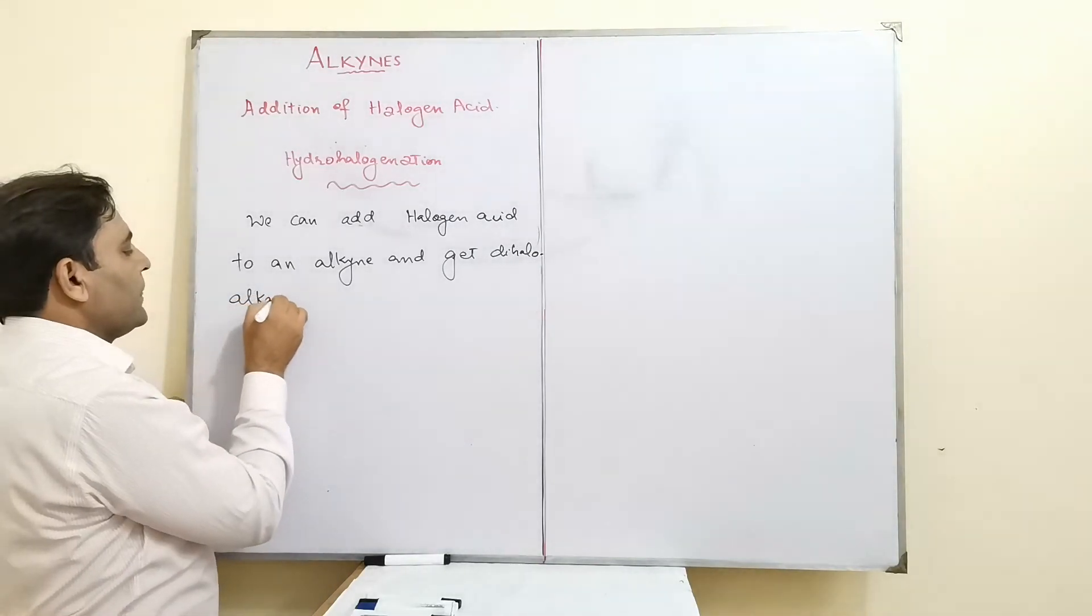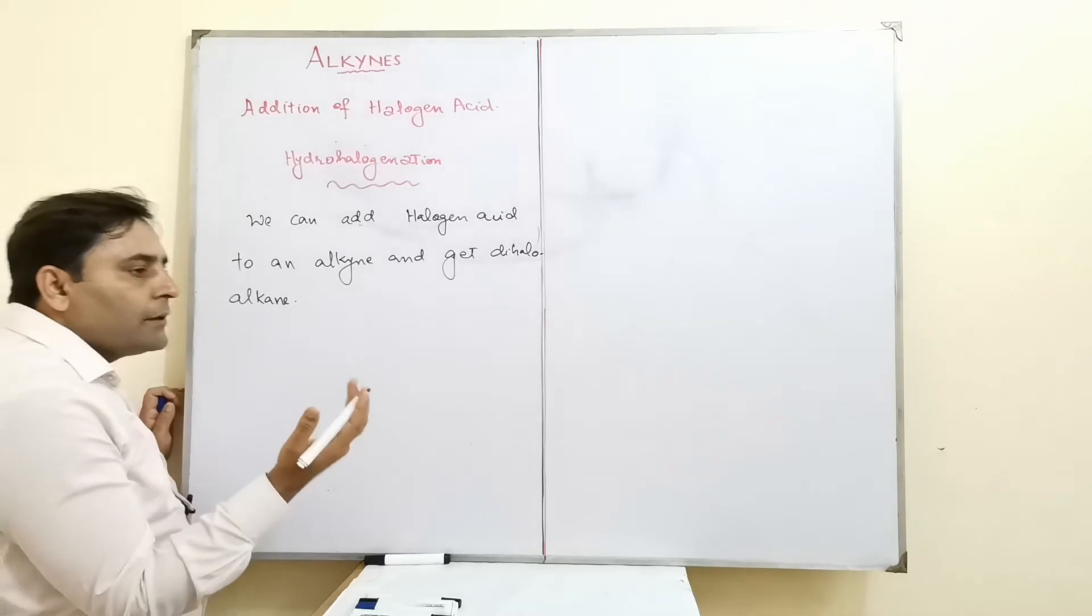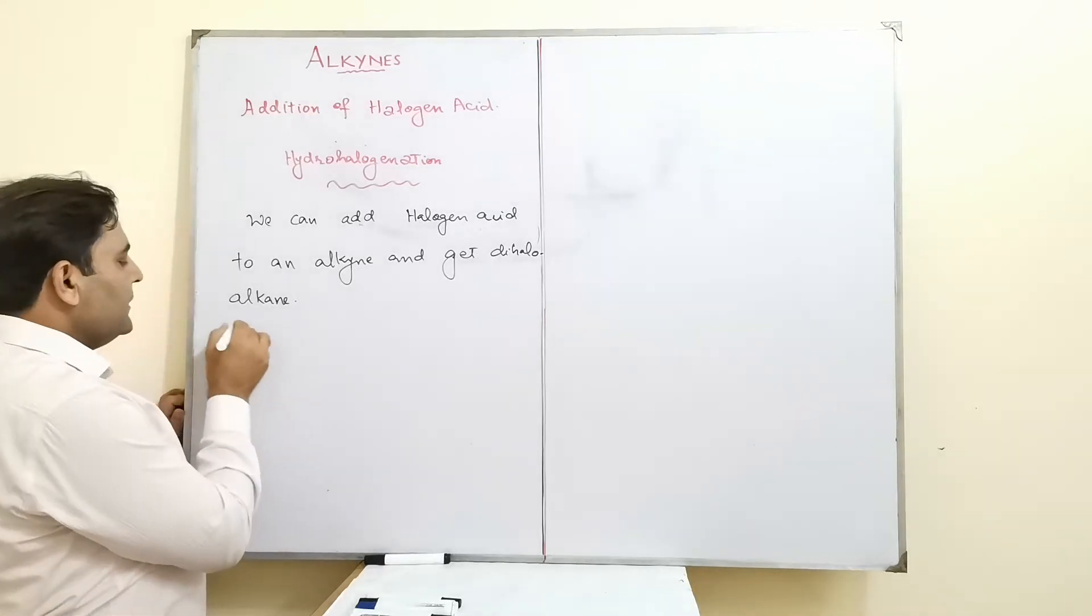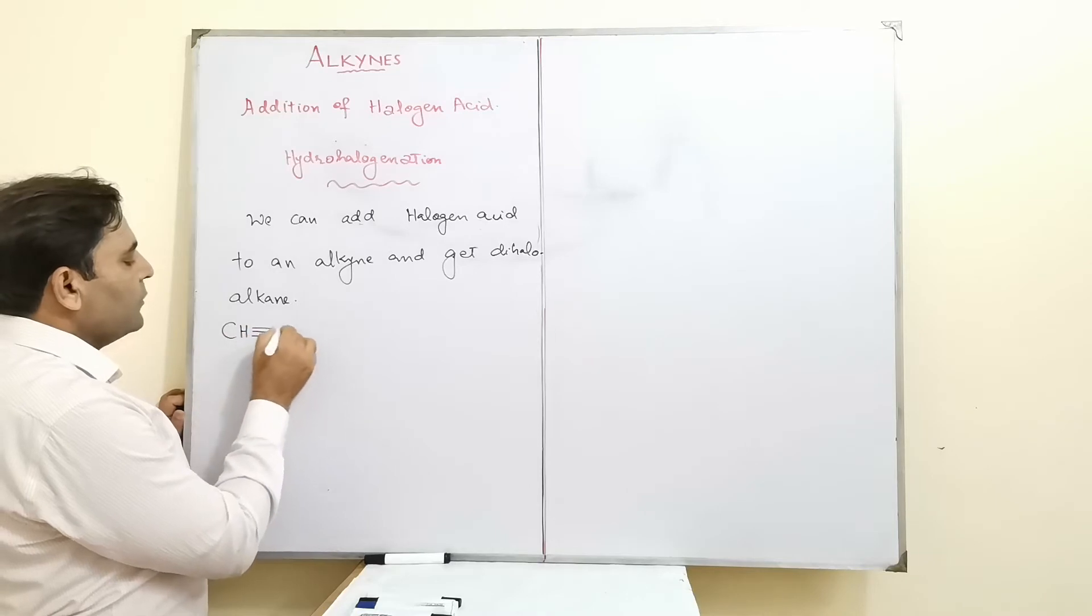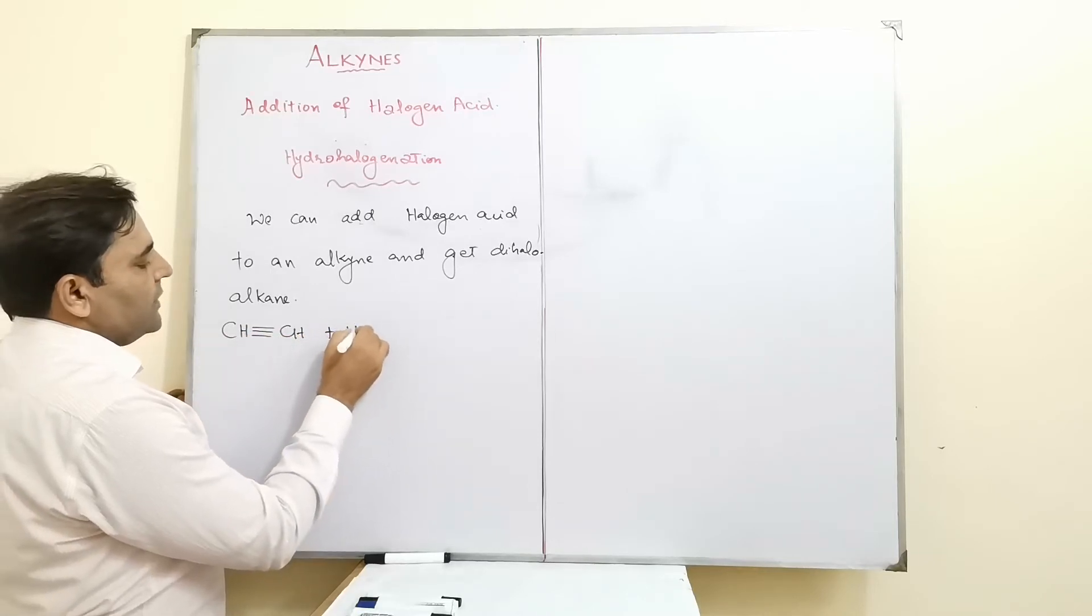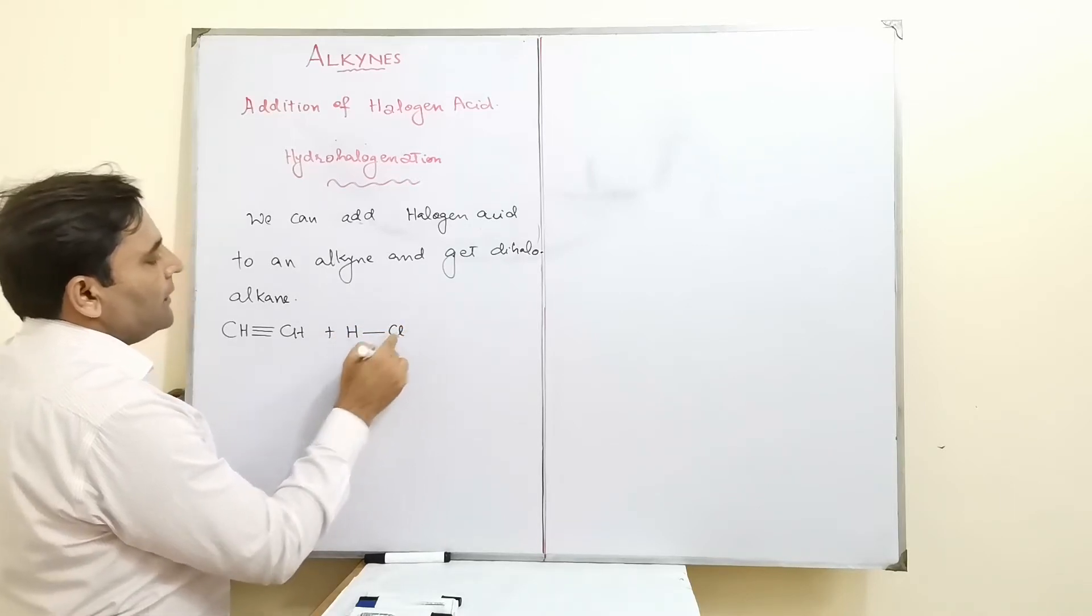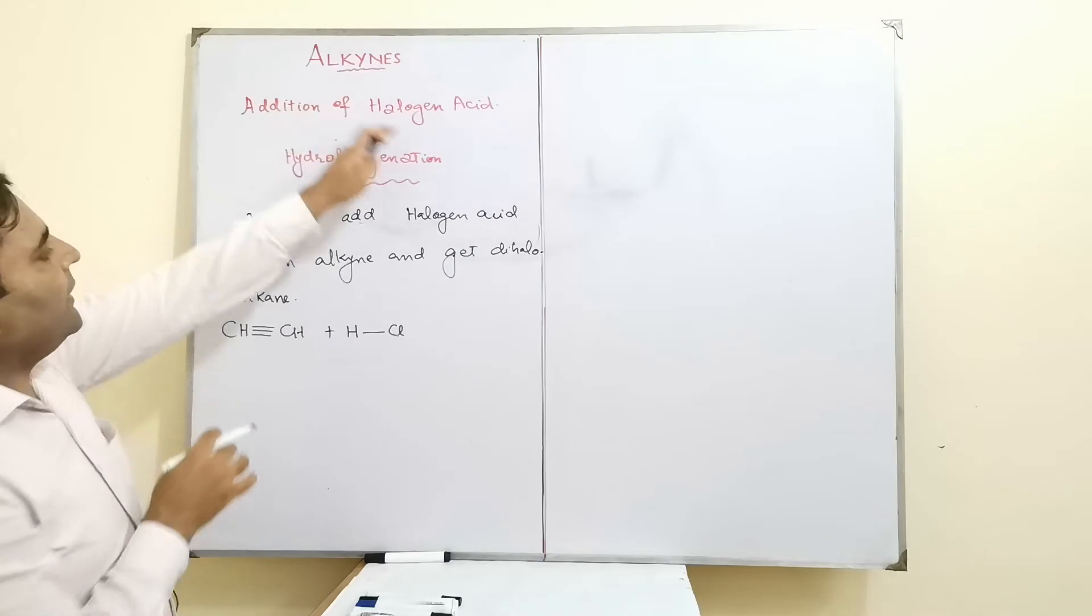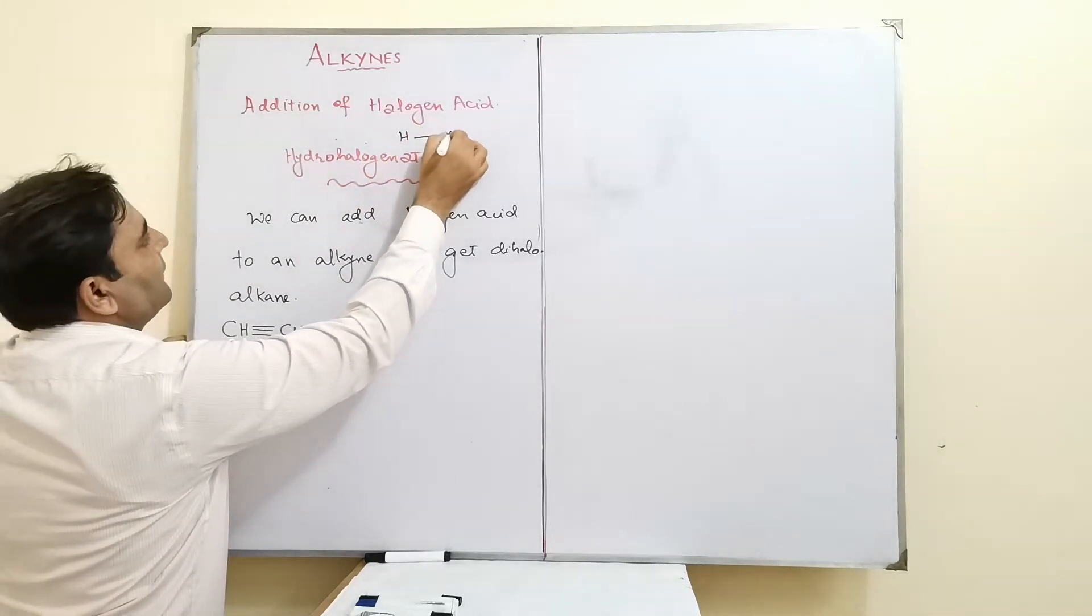If we look at the first addition of halogen acid to an alkyne, we have no rule to follow. But we can add halogen acid to an alkyne and get dihaloalkene.